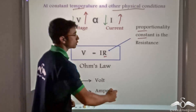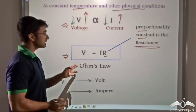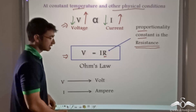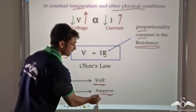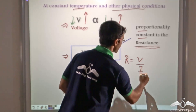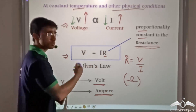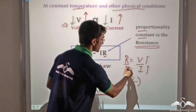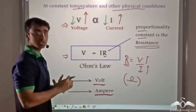This proportionality constant is known as resistance, and the numerical statement of Ohm's law is V equals IR. Here V, which is the voltage or potential difference, is measured in volts. I, which is the current, is measured in amperes. From this relation we get that R equals V divided by I, and R is given in units of ohms. Ohm's law states that as V increases, I increases, and R remains constant for constant temperature and all other physical conditions.